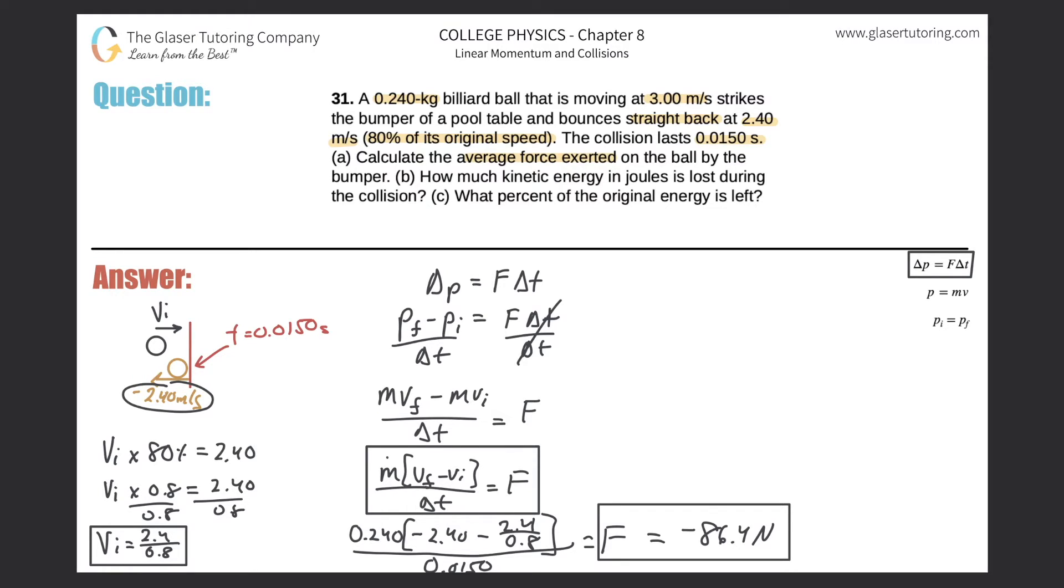So the force that was applied to the ball had to have been pointing to the left in order to change its momentum, aka its velocity, from moving to the right and then moving to the left. This should make sense. Now in terms of your answer, if I just flip the problem around, meaning I had the wall here, the ball coming in this way, and then moving back that way, your force would have been positive now.